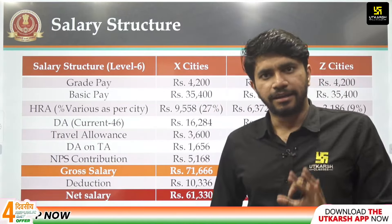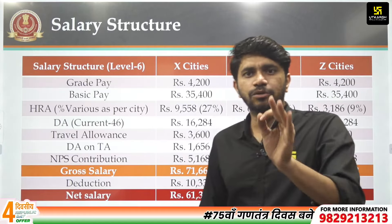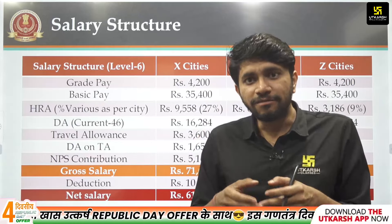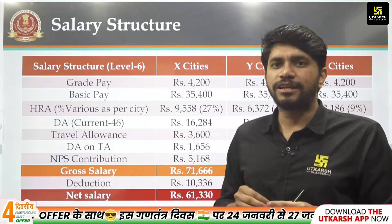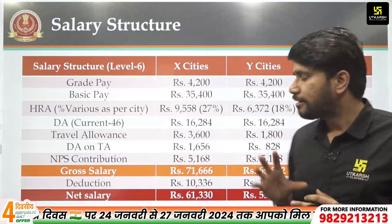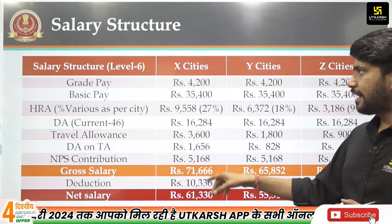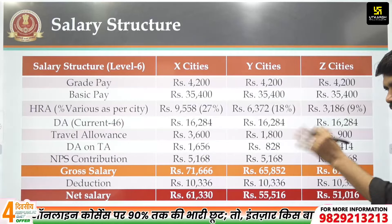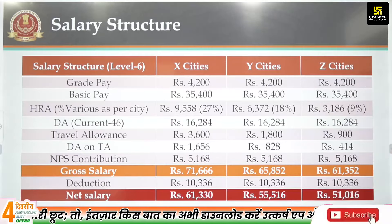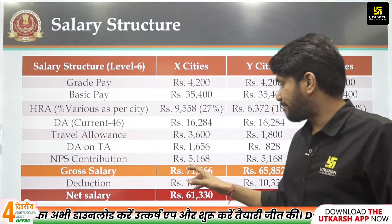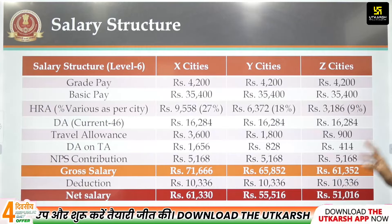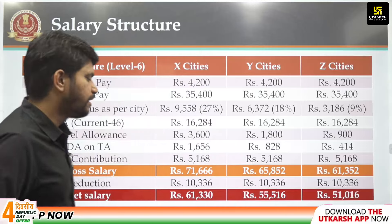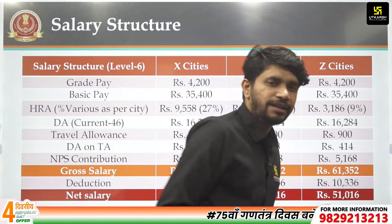We add up all these components to get the gross salary. There is also the NPS — National Pension Scheme contribution, which is 10% of basic plus DA, amounting to ₹5,168. The gross salary comes to ₹71,600 for X cities, ₹65,000 for Y cities, and ₹61,000 for Z cities. After deducting twice the NPS contribution, the net in-hand salary is ₹61,000, ₹55,000, and ₹51,000 respectively.